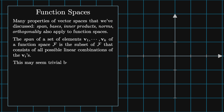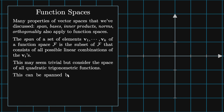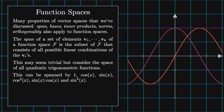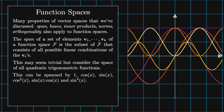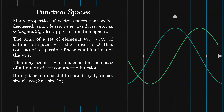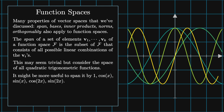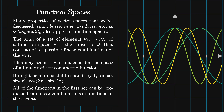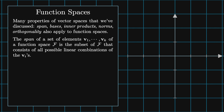Consider the space of all quadratic trigonometric functions. This can be spanned by 1, cosine x, sine x, cosine squared x, sine x times cosine x, and sine squared x. But it might be more useful to span it by 1, cosine x, sine x, cosine 2x, and sine 2x. Note that all of the functions in the first spanning set can be produced from linear combinations of functions in the second spanning set using trig identities.